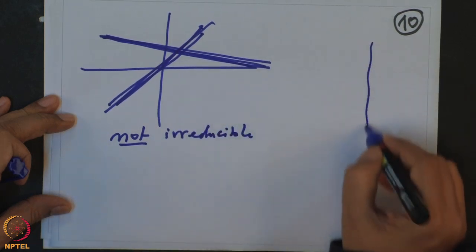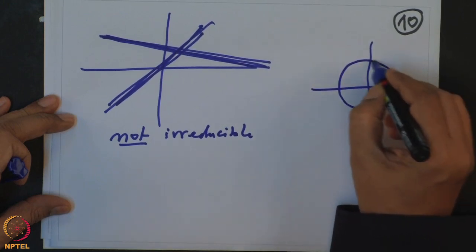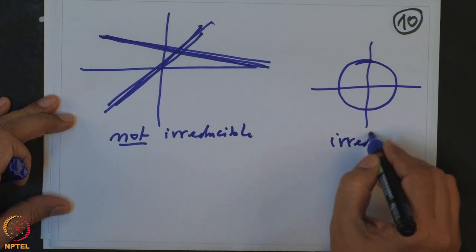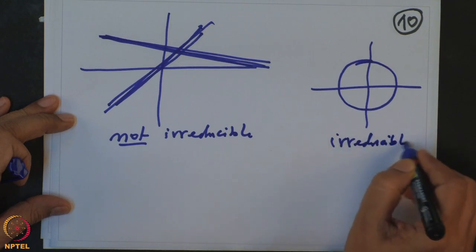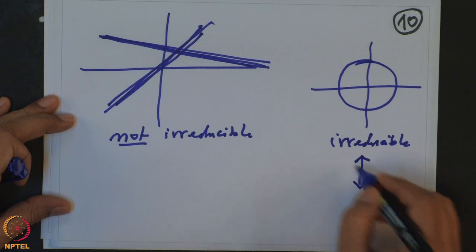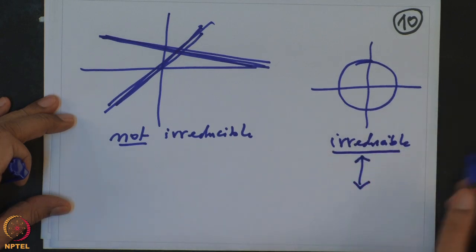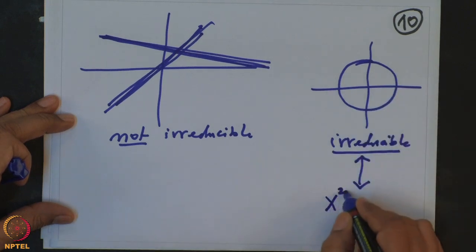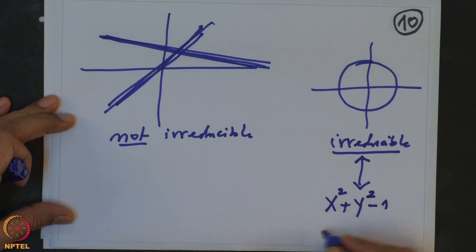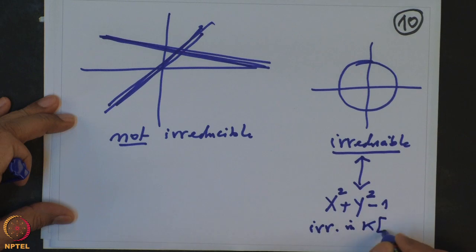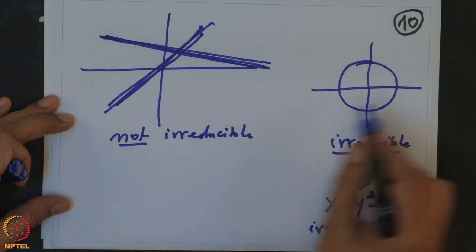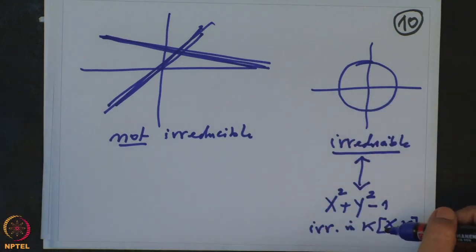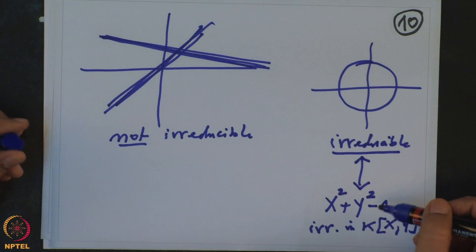Whereas the circle is irreducible. Later we will see that irreducibility for algebraic sets is equivalent to the corresponding polynomial being irreducible — so X² + Y² − 1 being an irreducible polynomial in two variables corresponds to the circle being irreducible. This is a geometric property that can be explained in algebraic terms.